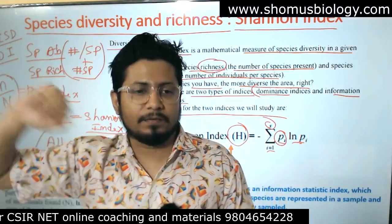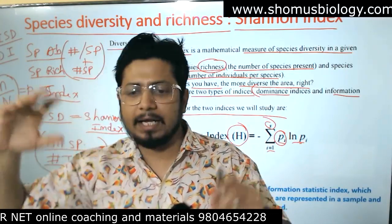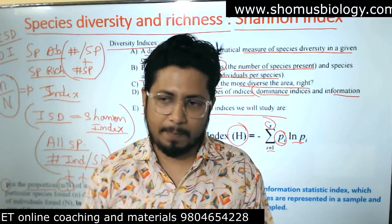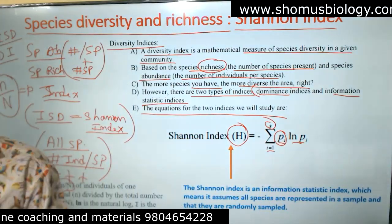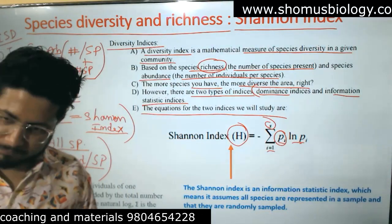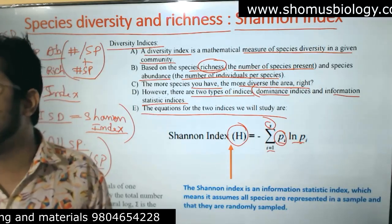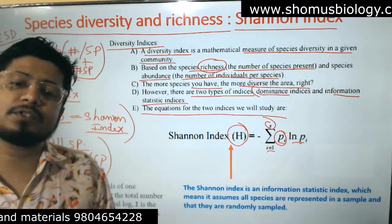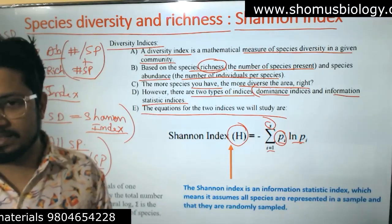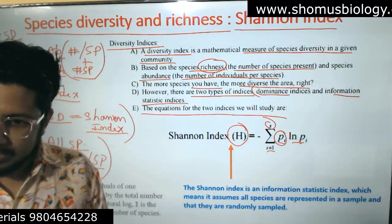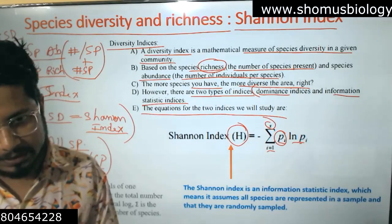A high value of the Shannon index means high diversity in that area. It accounts for all individuals present, so even if a single new species is added or any existing species is removed, it is going to change the value of the Shannon index.